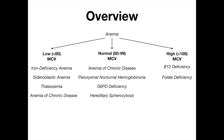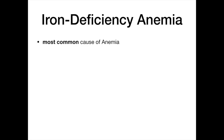One thing to point out: this is not an all-inclusive list. There are other lower-yield diseases not on this slide — if you're interested, I'd refer you to Pathoma, where Sitar does a wonderful job summarizing all of those. Let's start from the left and work across: all the lows, then all the normals, then all the highs. We'll begin with iron deficiency anemia.